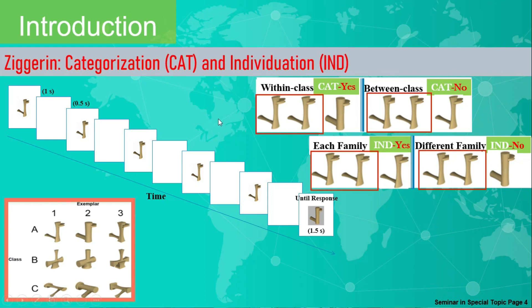In this task, we have two kinds of tasks: categorization — which I will abbreviate as CAT — and then individuation — which I will abbreviate as IND.